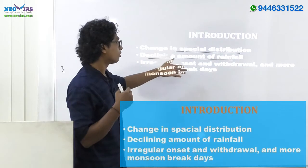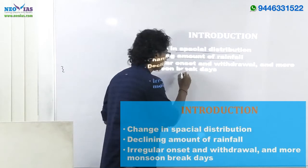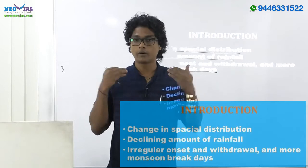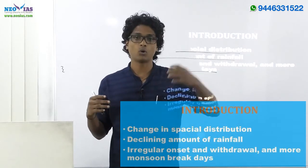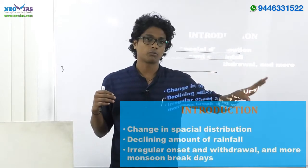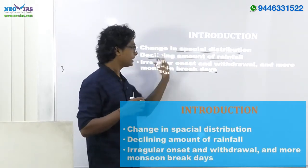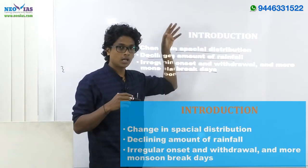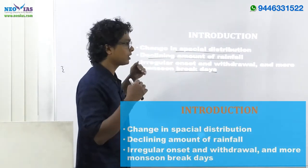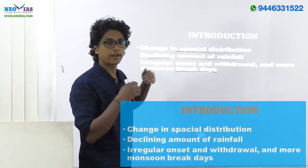Another behavioral change is irregular onset and withdrawal, as well as more monsoon break days. Monsoon break days means that after the onset of monsoon, there are a few days or weeks without any monsoonal rainfall. All of these are behavioral changes in the Indian Monsoon, and you can enter your answer by explaining any two of these points in the introduction.